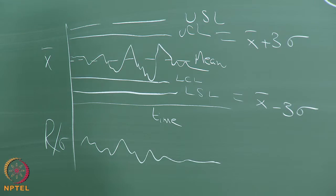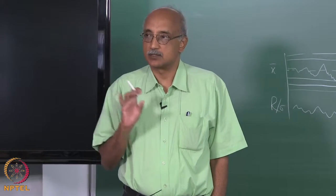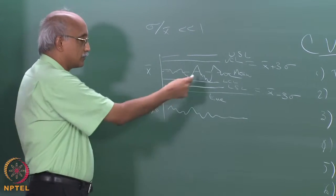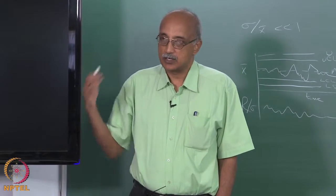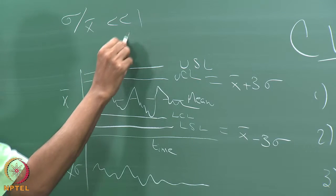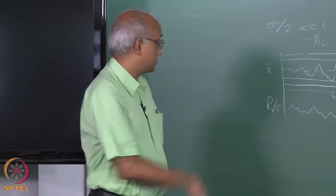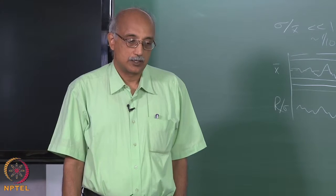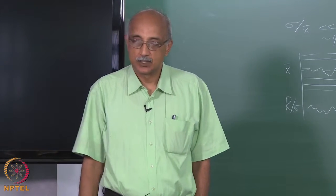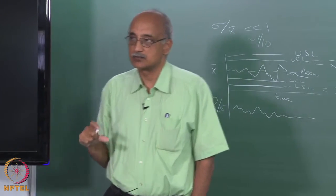When people talk about 6 sigma quality, what they are talking about is this kind of methodology where you try to maintain your process within plus or minus 3 sigma. The inherent assumption is that sigma over X-bar is much smaller than 1. This will break down if your standard deviation in the process is very high, because then your X-bar plus 3 sigma can actually exceed your upper control limit. In a well-behaved process, the ratio of standard deviation to mean — called the variability coefficient — should not exceed 1/10, or 10 percent. If you achieve that, your UCL and LCL are going to be much tighter than the corresponding USL and LSL.